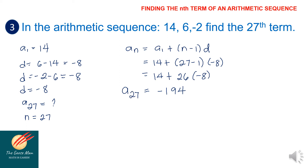Therefore, the 27th term is negative 194.